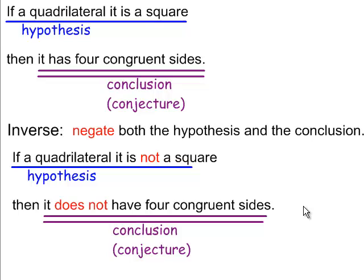We're doing an inverse. Starting with the same original statement: if a quadrilateral is a square, then it has four congruent sides. The inverse — you negate both the hypothesis and the conclusion and keep them in the same order. So it becomes: if a quadrilateral is not a square, then it does not have four congruent sides. We search for a counterexample: a rhombus is a quadrilateral that is not a square, but it does have four congruent sides. So that's a counterexample proving this inverse is not true.